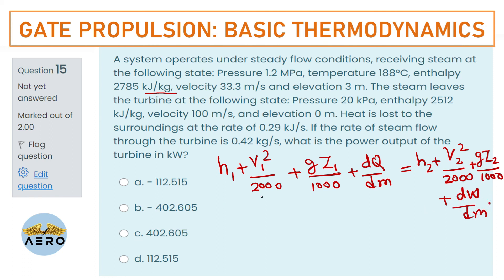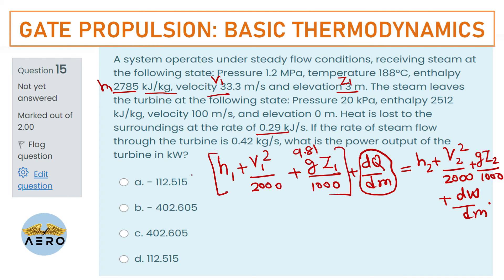The respective values are: H₁, V₁, Z₁ (with g = 9.81), and dQ/dm = 0.29 kJ/kg multiplied by the mass flow rate. Substituting and solving these values, the work output of the turbine is 112.515 kW.